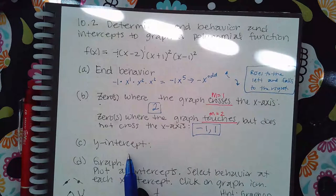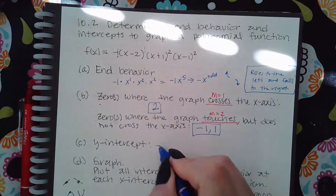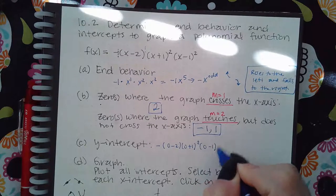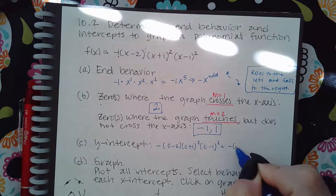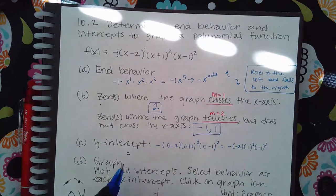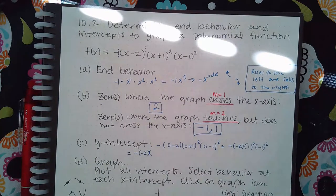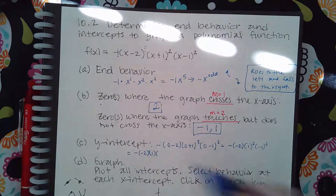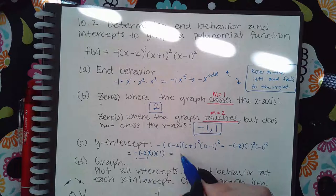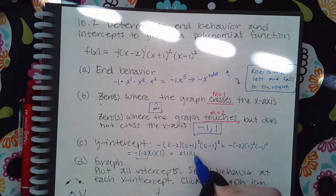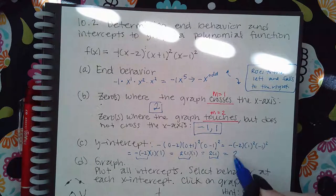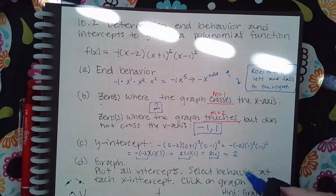For the y-intercept, you plug in zero. Substituting zero into the function gives: negative one times negative two, times positive one squared, times negative one squared. That simplifies to negative times negative two times one times one. Multiplying left to right: negative times negative two gives positive two, times one gives two, times one gives two. So the y-intercept is positive two.